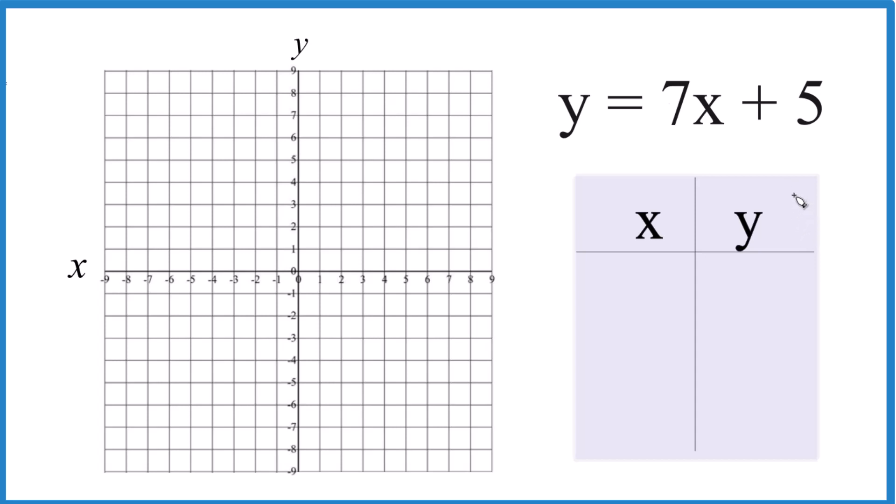If you need help with that, there's a link at the end of this video. But we're going to use a table of values here. Put values in for x, figure out what y is equal, and then graph those. That'll give us the line for y equals 7x plus 5.